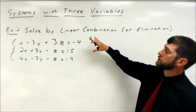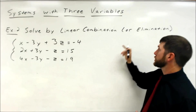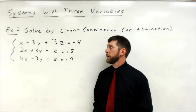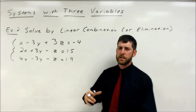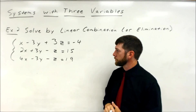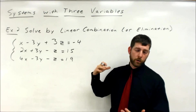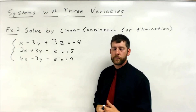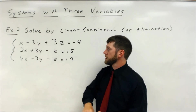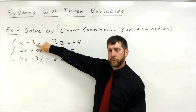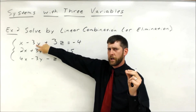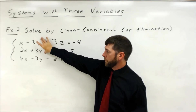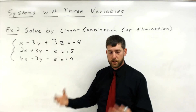Now we're going to look at solving a three-variable system by linear combination, or elimination as it's often called. Notice how none of these variables in these equations are nice, neat, easy-to-solve ones like we had in the last example. So we're going to go with our linear combination strategy. Pick a variable that's easy to get all the coefficients the same. Notice how the y's have a negative 3 and positive 3, but I can only combine two at a time, so I'm going to pair them up.